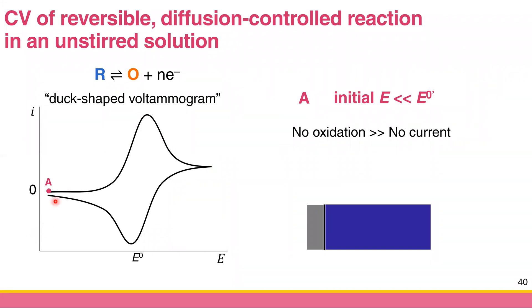Let's explain why it has this shape. The y-axis is current and the x-axis is potential. Starting from point A: the applied potential is much lower than the formal potential. Since we want to oxidize the species, the potential must be higher than the formal potential. Because it is much lower, there is no oxidation — the current is zero, and you don't get any Faradaic current.